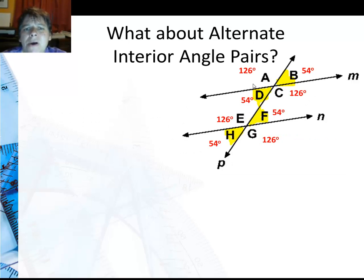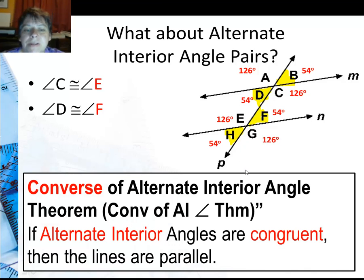What about alternate interior angle pairs? You can see that angle D and angle F are congruent, as are angles C and E. C and E we have 126, angle D and F we have 54. So we see that when these alternate interior angles are congruent, the lines are going to be parallel.